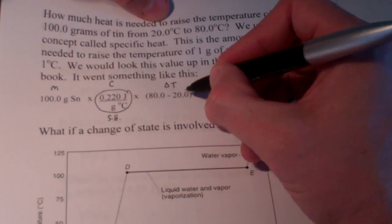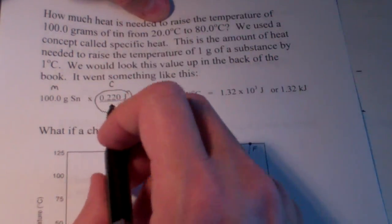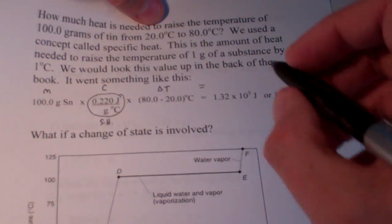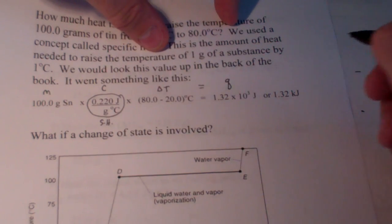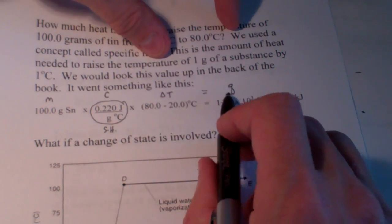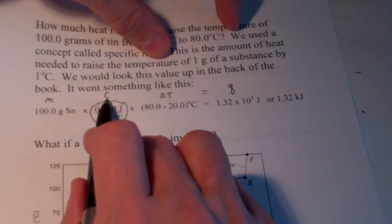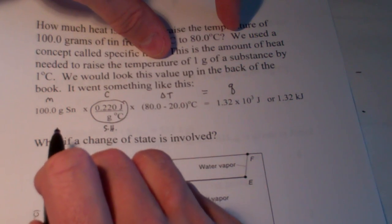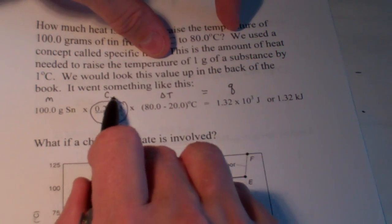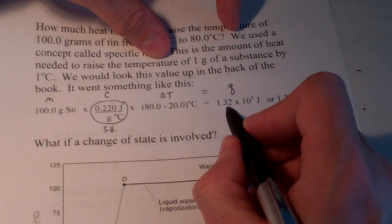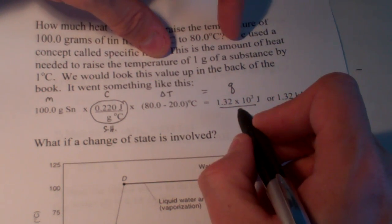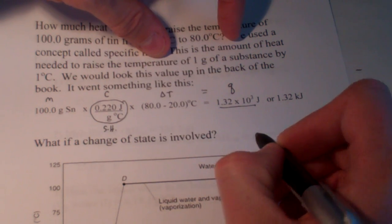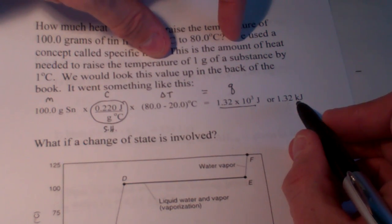So, this will equal the energy required for that process. Now, the symbol for that is Q. So, we have Q equals M times C times delta T. Sometimes, these are referred to as MCAT problems. So, when we multiply that out and round off to three significant figures, I end up with 1.32 times 10 to the third joules, or 1.32 kilojoules.